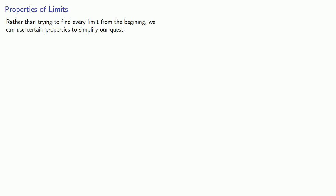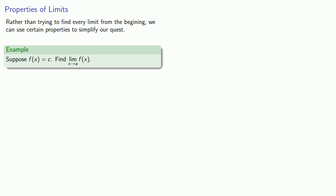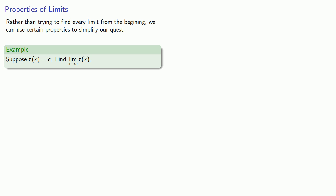For example, suppose f of x is c, some constant function. Find the limit as x approaches a of f of x. Remember what this notation means: we want to know the value our function is close to whenever x is close to a. If x equals 7, we have no idea if we're actually close to a, so that doesn't do us any good.